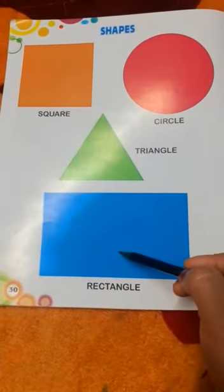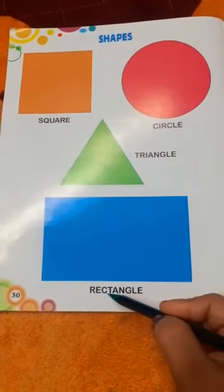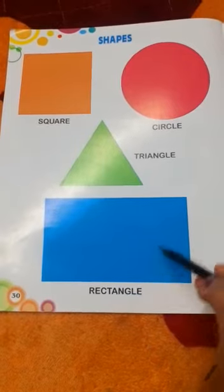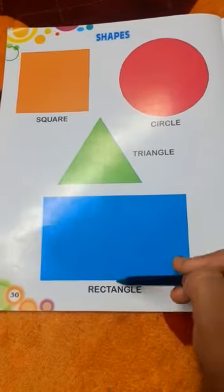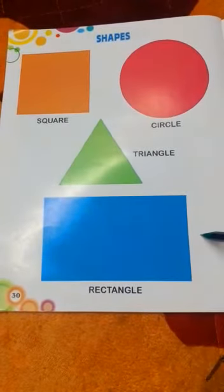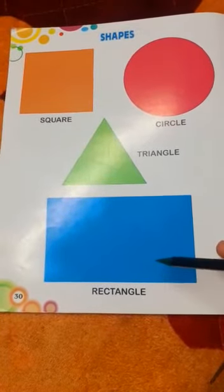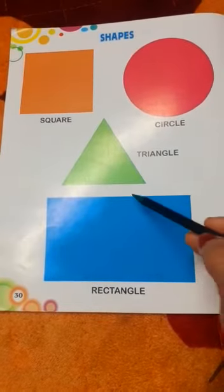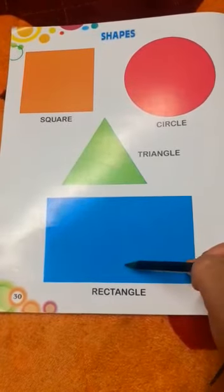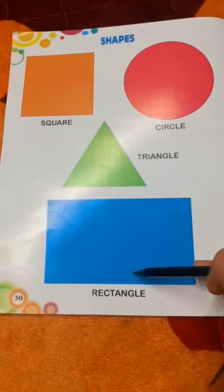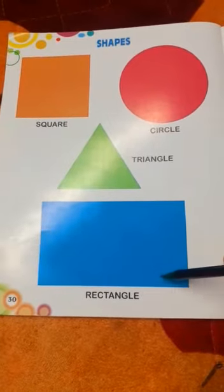This is a rectangle. What is the spelling of rectangle? R-E-C-T-A-N-G-L-E, rectangle. It has four sides: one, two, three, four. It has four sides. Its opposite sides are equal. It is a rectangle. R-E-C-T-A-N-G-L-E, rectangle.